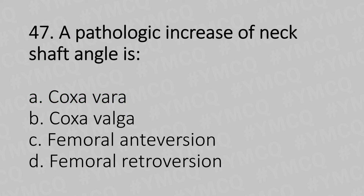Moving to our 47th question. A pathological increase of the neck-shaft angle is: Option A: Coxa vara. Option B: Coxa valga. Option C: Femoral anteversion. Option D: Femoral retroversion. And the answer is Option B: Coxa valga.